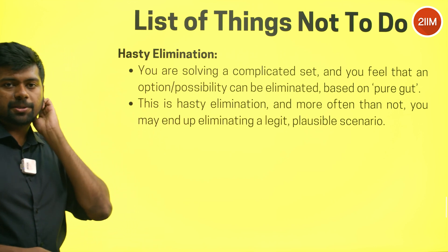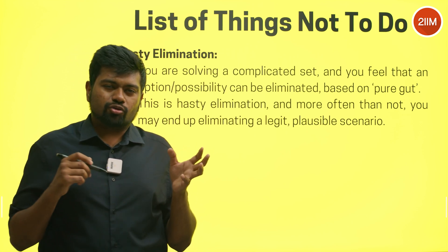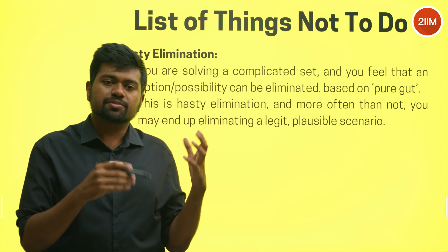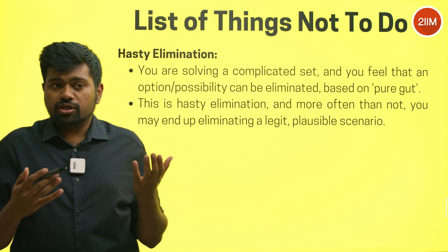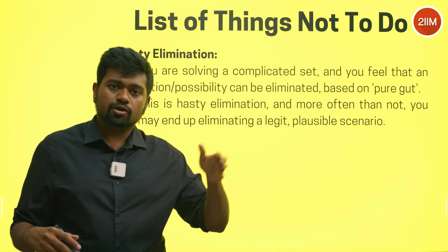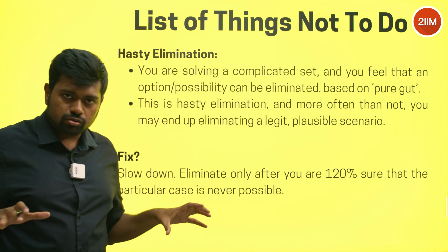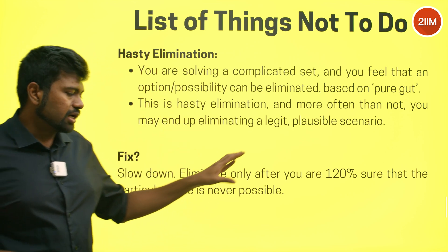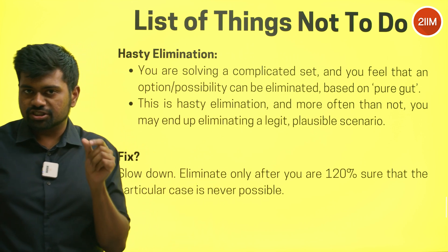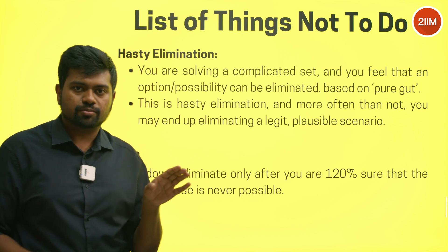Hasty elimination happens when you're operating from a mindset of weakness — you're scared and your mind is begging for an easy way out. You eliminate options or scenarios without thoroughly analyzing them, just to reduce calculations or finish faster. The fix: slow down, consider all possibilities, and eliminate only when you're 120% sure a scenario can never happen.